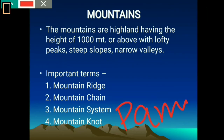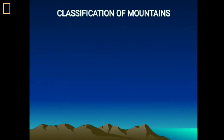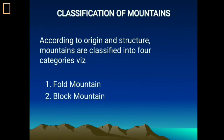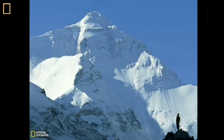Now come to the classification of mountains. According to their origin and structure, we classify mountains into four categories: number one, fold mountain; number two, block mountain; number three, volcanic mountain; and number four, residual mountain. Today we will mainly focus on the fold mountain. Examples of fold mountains include the Himalaya, Alps, Rocky, and the Atlas.